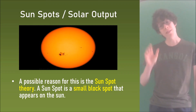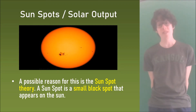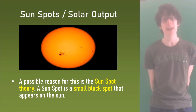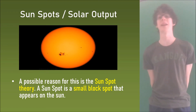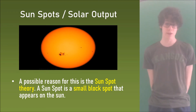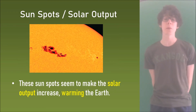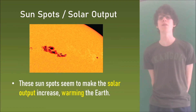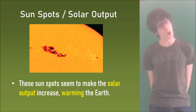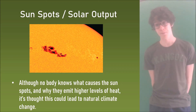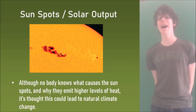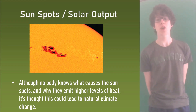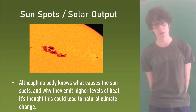A possible reason for this is the sunspot theory. A sunspot is a small black spot that appears on the sun. These sunspots seem to make the solar output increase, warming the earth. Although nobody knows what causes the sunspots and why they emit higher levels of heat, it is thought that this could lead to natural climate change.